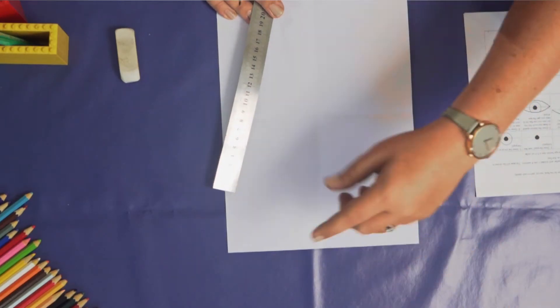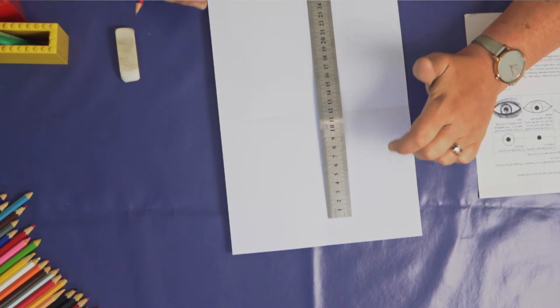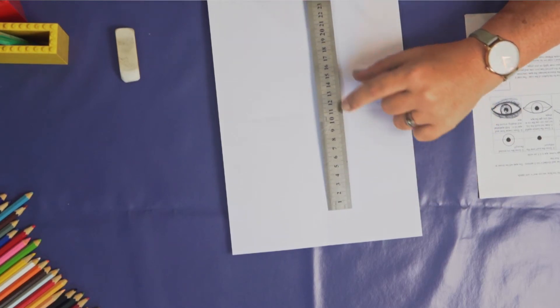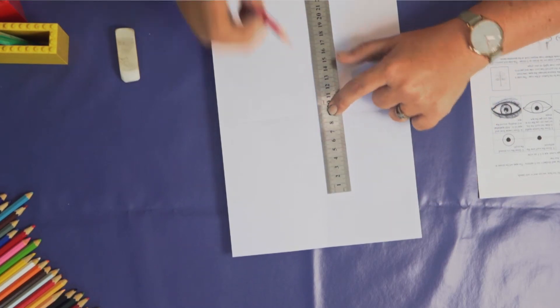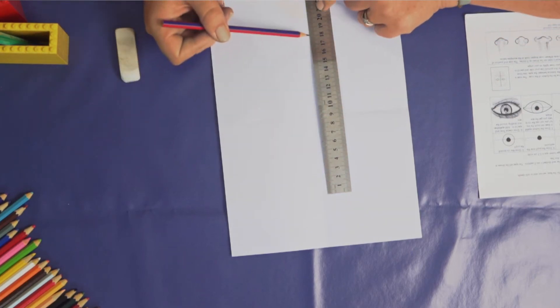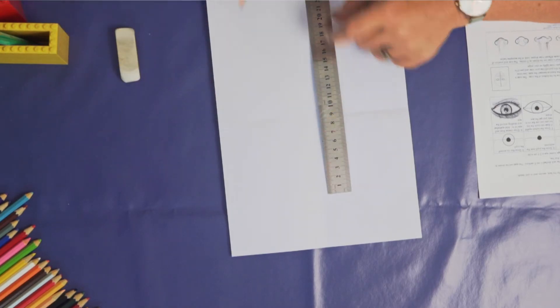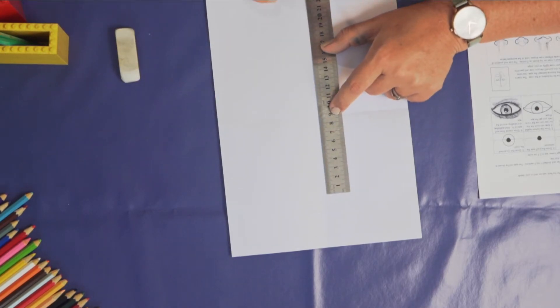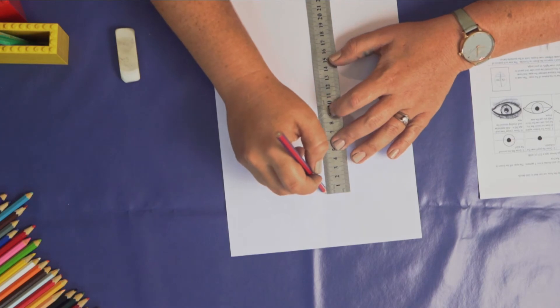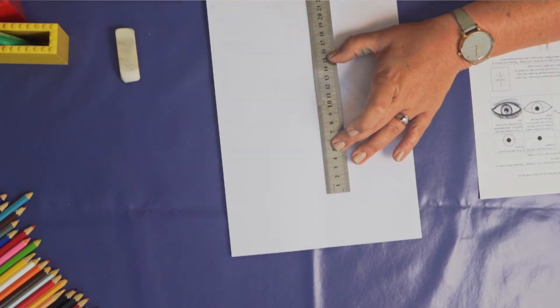We're going to start with a vertical line. This line is going to be 18 centimeters long and the first 9 centimeters should be above our horizontal fold and then the second 9 centimeters below. So this fold line is dividing our line in half. Just line it up and this should be a nice light line. We don't want to see it at the end. It's just going to be a guide to help us draw the face.